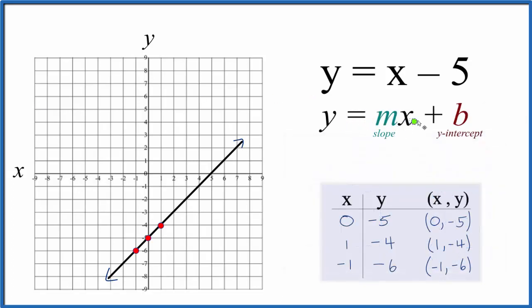So we have y equals mx plus b. b is the y-intercept. So on the y-axis, b, that's where we're going to cross the y-axis. And we can see b right here is negative 5. So let's go down to negative 5 on the y-axis right there. That's our y-intercept.